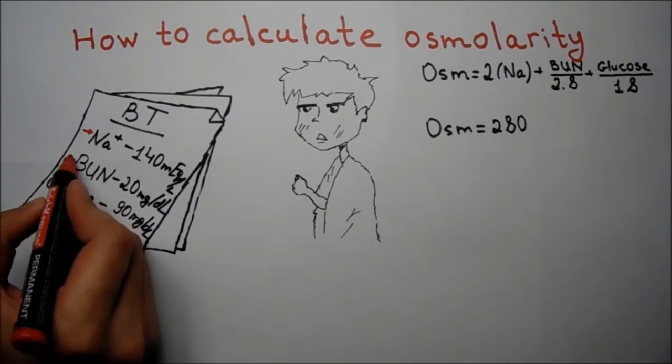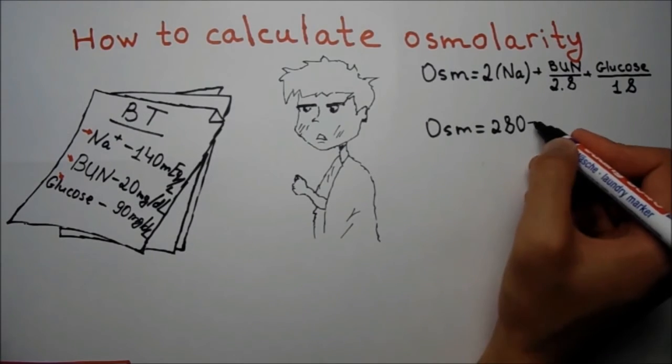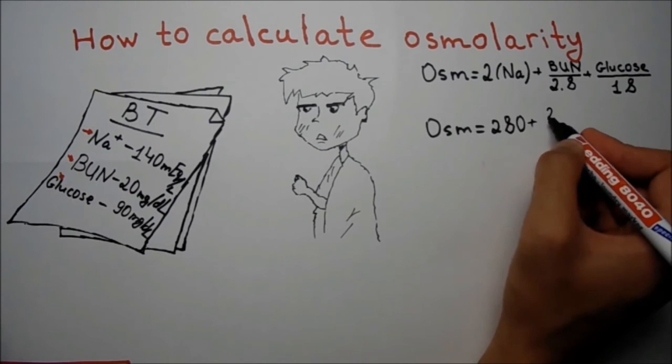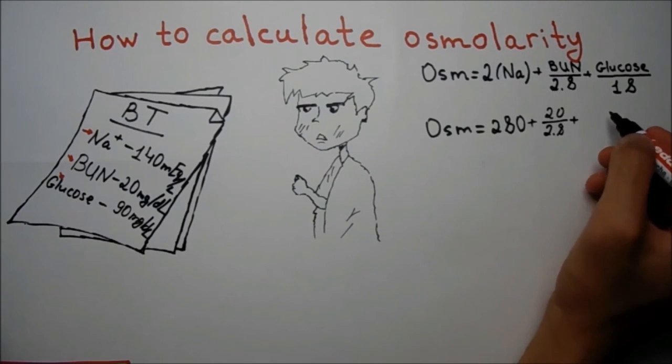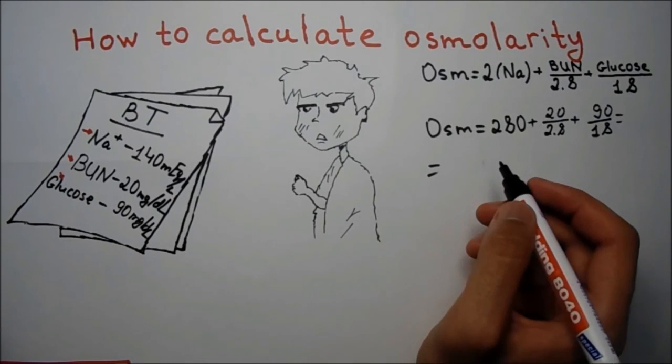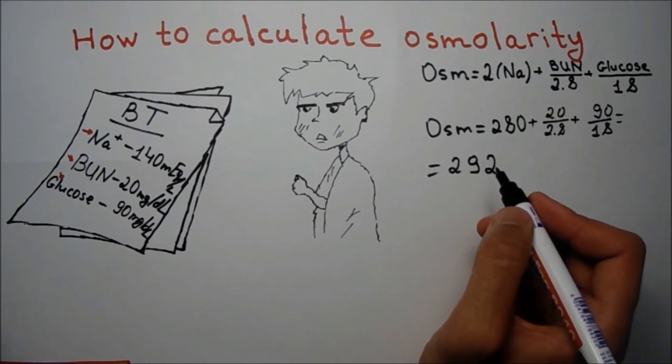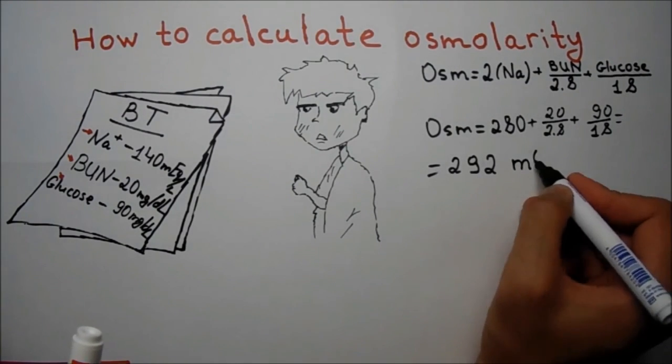Then we take a look at blood urea nitrogen and glucose levels. Blood urea nitrogen here is 20 mg per deciliter and glucose in this patient is 90 mg per deciliter. I'll put these here divided by 2.8 for blood urea nitrogen and 18 for glucose respectively. So we get 282 and this is the normal osmolarity of extracellular fluid.